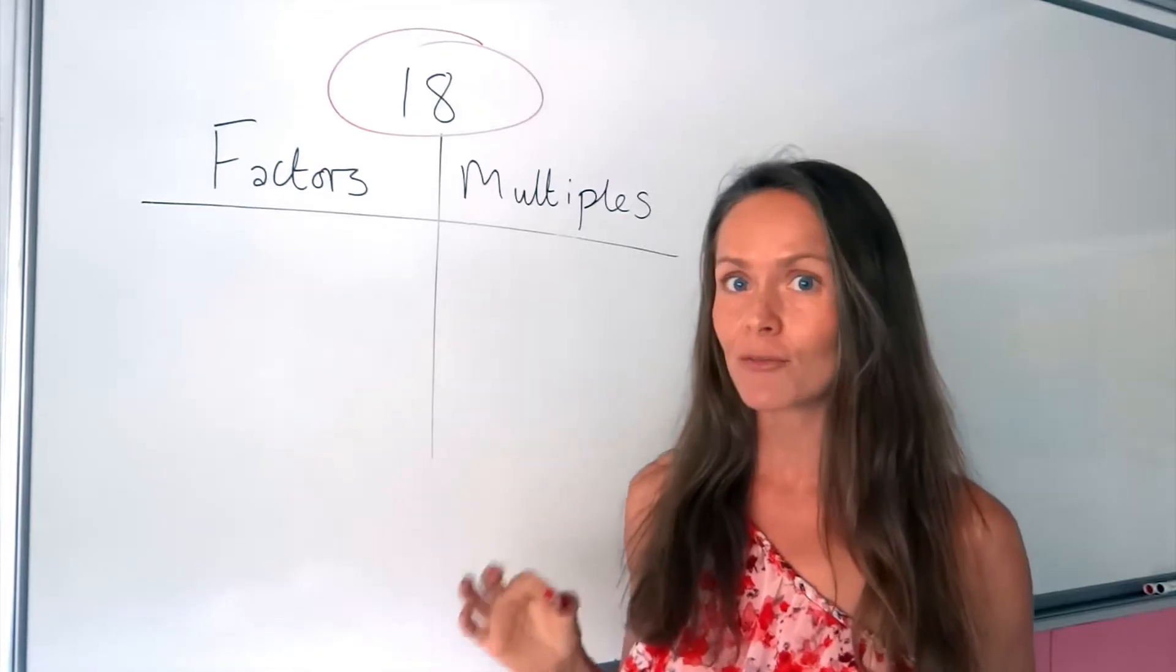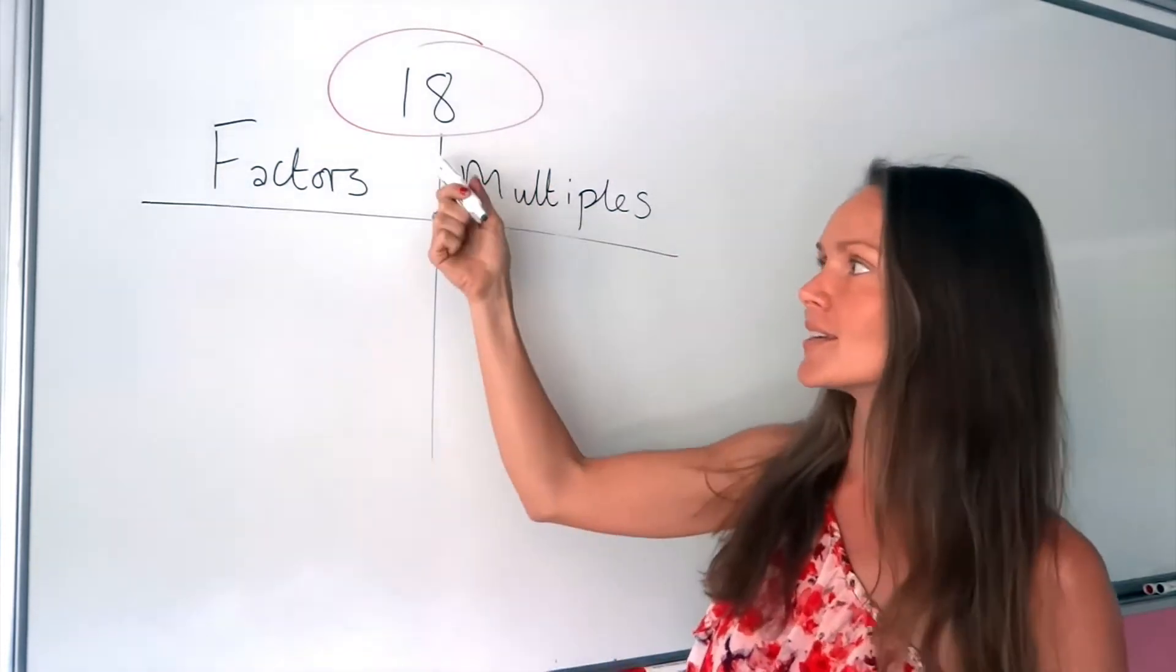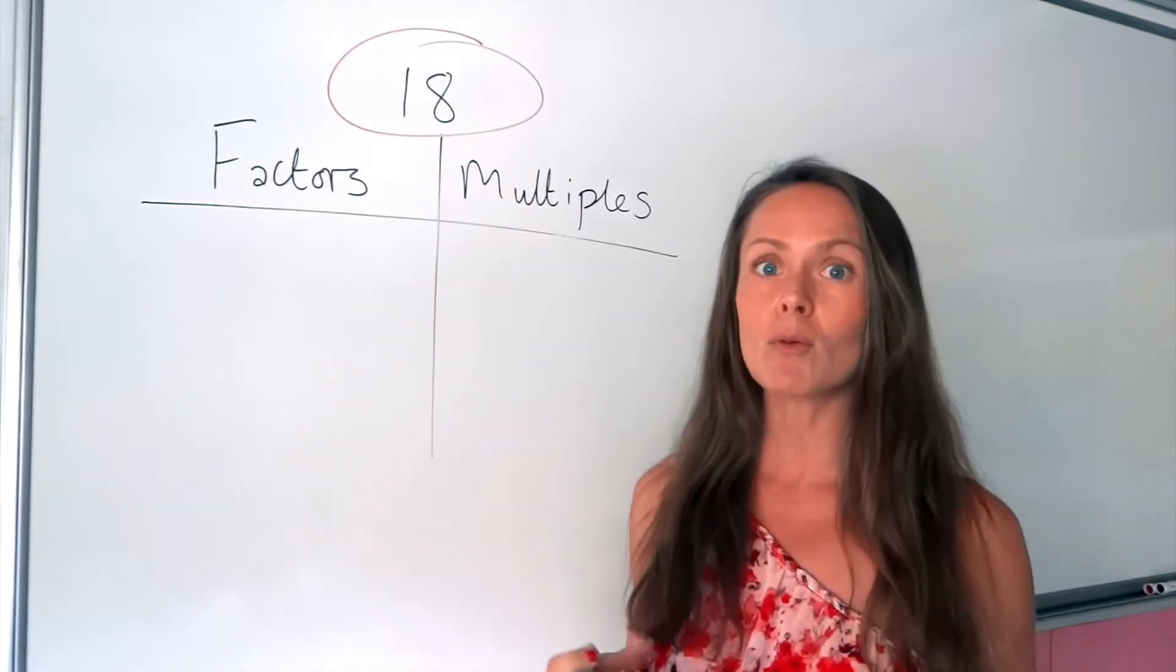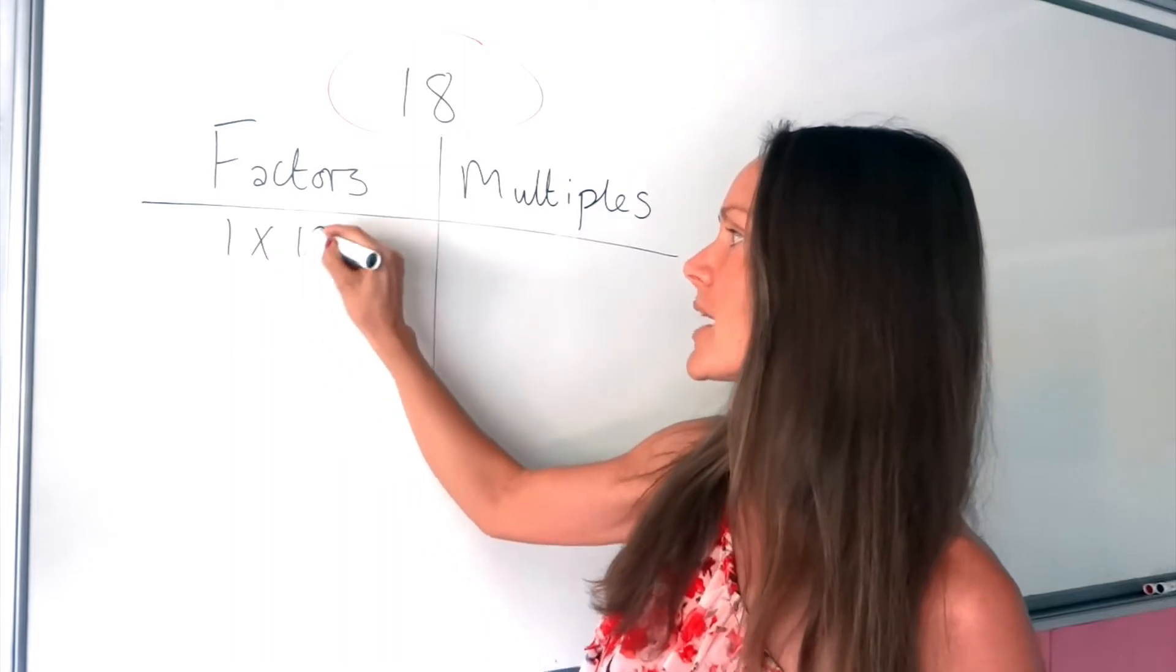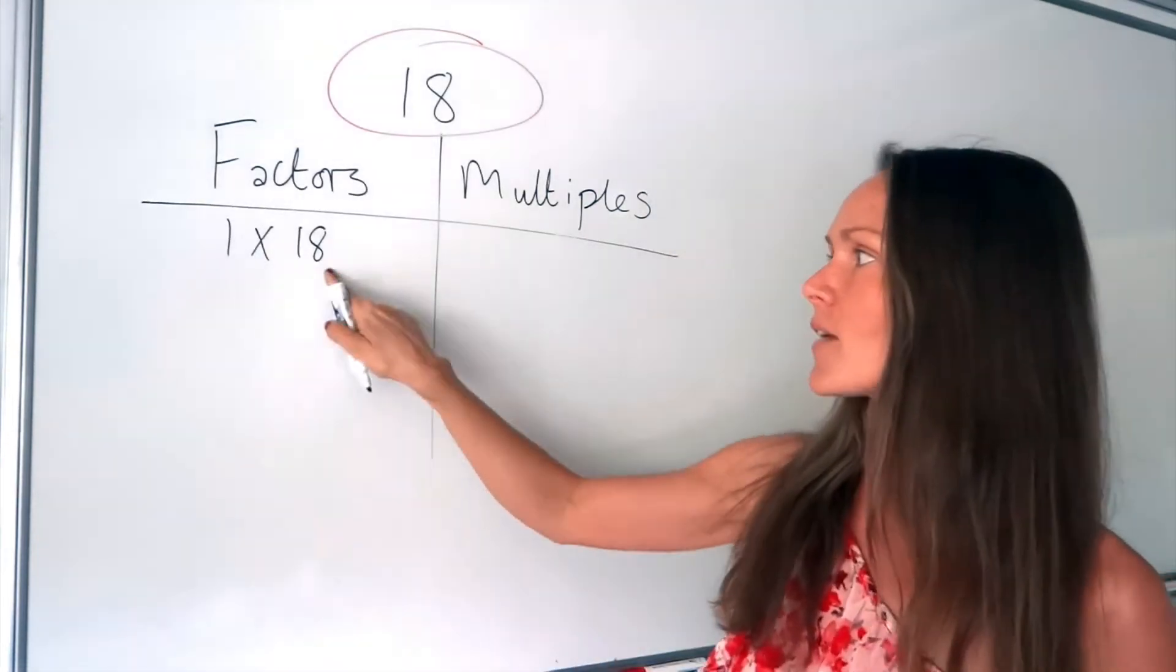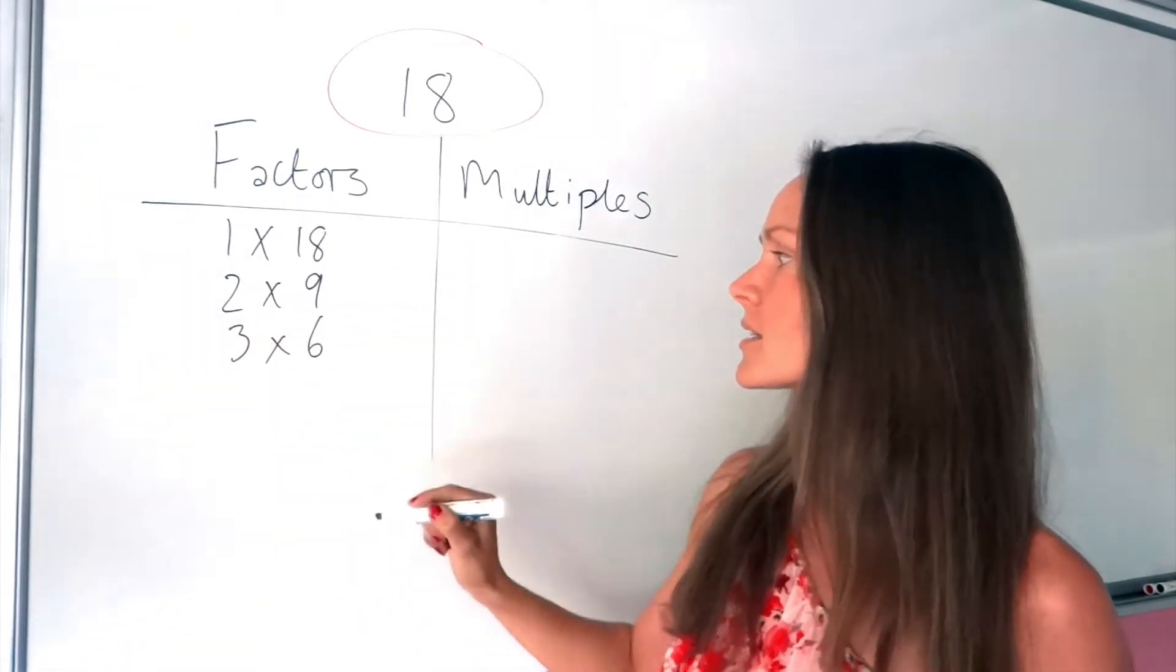And I'm going to start by listing the factors. So remember, these are the numbers that fit exactly into 18. The numbers that we multiply to find 18. So we've got 1 times 18, which is 18. So these are factors. We've got 2 times 9, which is 18. And 3 times 6.